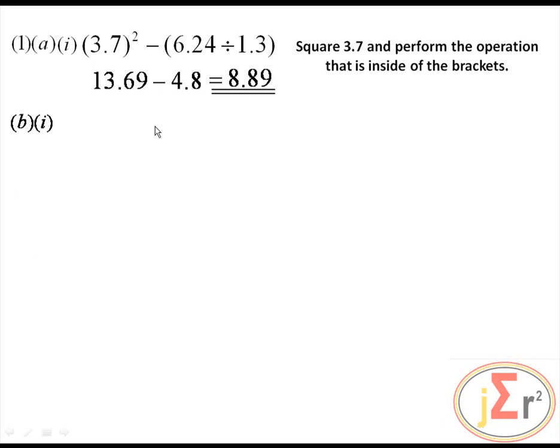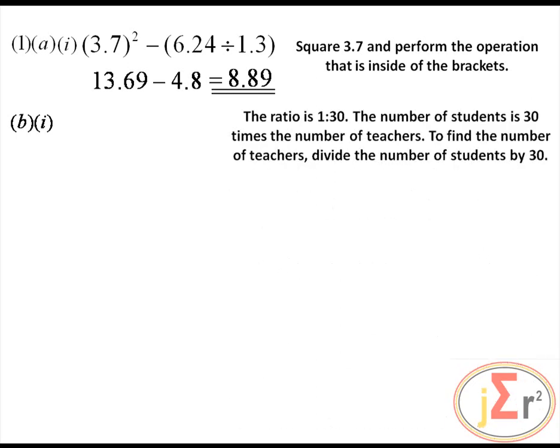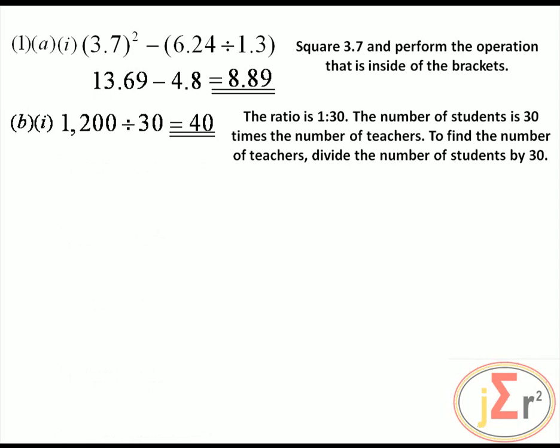A total of 1,200 students attend Top View High School. The ratio of teachers to students is 1 to 30. The number of students is 30 times the number of teachers. To find the number of teachers, divide the number of students by 30, and we end up with 40 teachers.